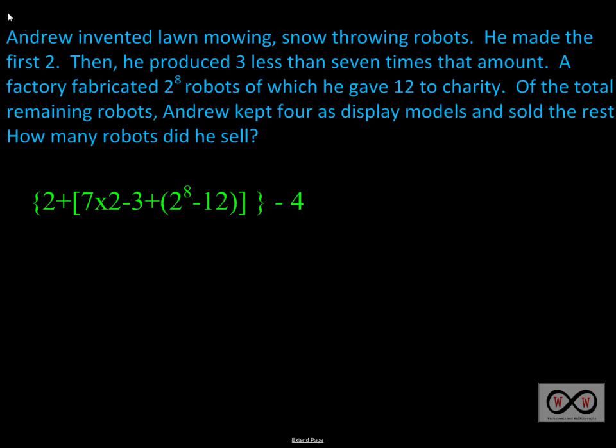Andrew invented lawn mowing, snow throwing robots. He made the first two, then he produced three less than seven times that amount. A factory fabricated 2 elevated to the 8th power robots, of which he gave 12 to charity. Of the total remaining robots, Andrew kept four as display models and sold the rest. How many robots did he sell?